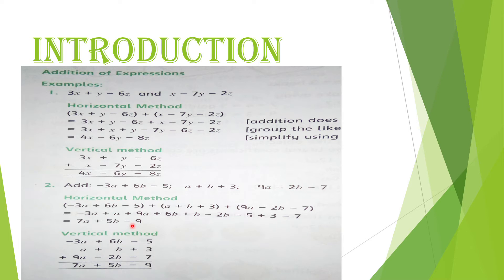Vertical method mein: pehli expression sabse upar, neeche like terms likhen — a ke neeche a wali, b ke neeche b wali, constant ke neeche constant. Teesri term: plus 9a minus 2b minus 7. Ab: 9 aur 1 milake 10, 10 mein se 3 nikaalen to 7a. Phir 6 aur 1 milake 7, 7 mein se 2 nikaalen to 5b.